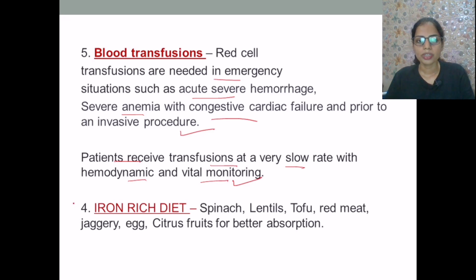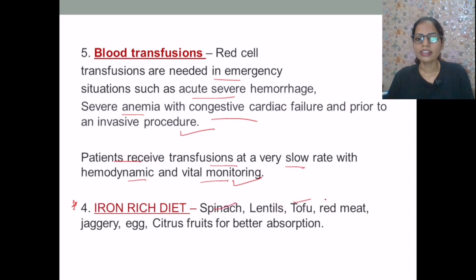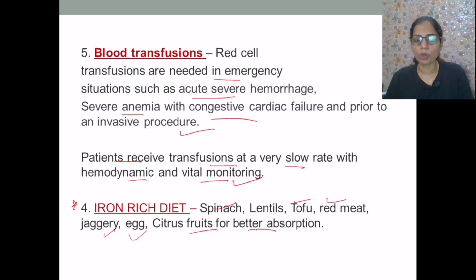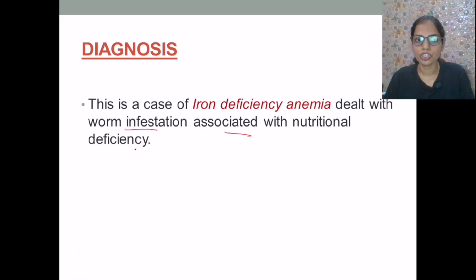An important part of treatment is giving the child an iron-rich diet. The diet should include spinach, lentils, tofu, red meat, jaggery, and eggs — commonly available foods — as well as citrus foods for better iron absorption. The final diagnosis is that this is a case of iron deficiency anemia dealing with worm infestation associated with nutritional deficiency.